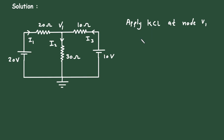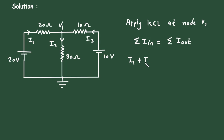According to KCL, the summation of all currents entering a node is equal to the summation of all currents leaving the node. Here at this node, the entering currents are I1 and I3, and I2 is the leaving current. So it will be I1 plus I3 as entering current, and leaving current is I2.